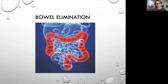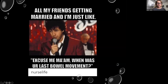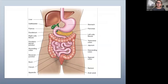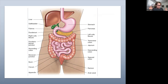Moving on to bowel elimination. Let's review the GI tract because it has a lot to do with bowel elimination. We have our liver, gallbladder, stomach, and pancreas. Once past the stomach pylorus, we enter the duodenum. Remember the duodenojejunal junction — this will come in handy when we discuss NG tubes, J-tubes, and G-tube feedings. Then the jejunum, the small intestine — which is quite a few feet long and intertwined.